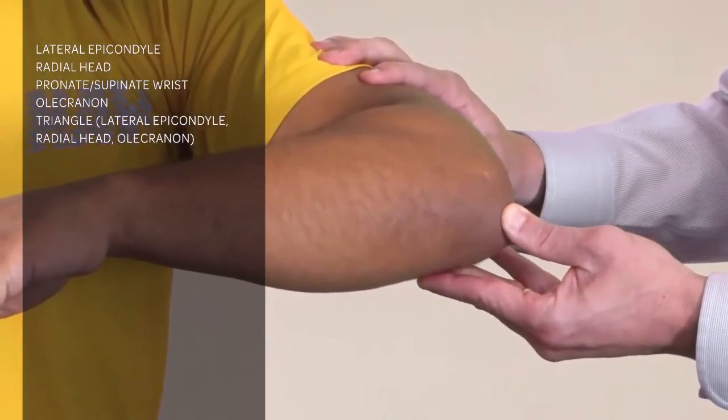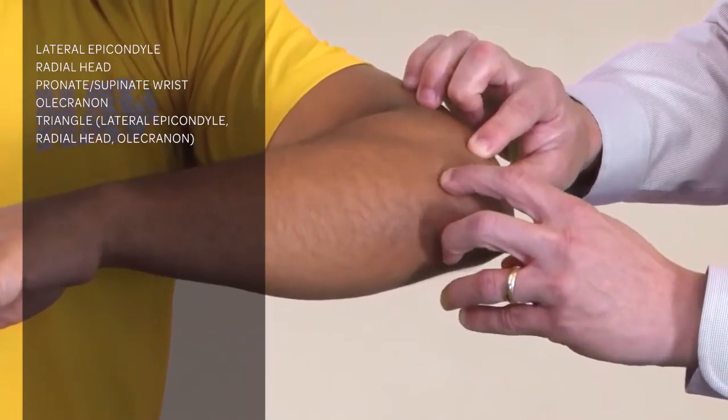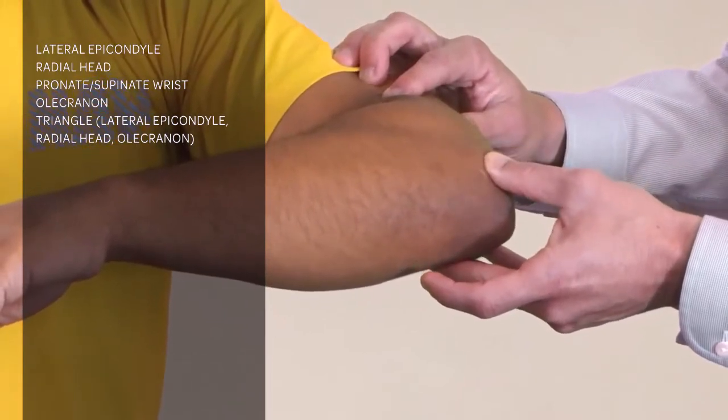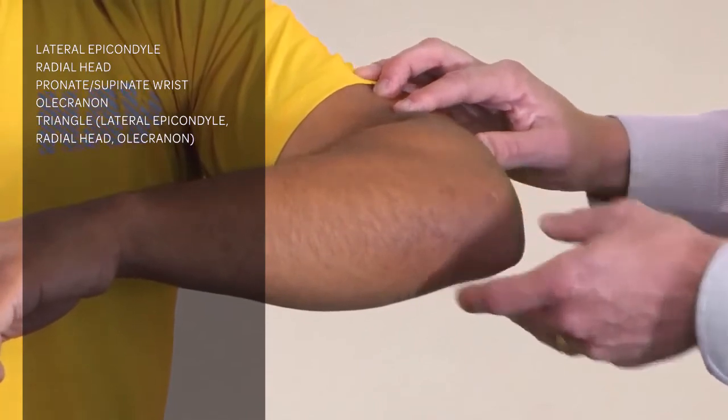Then you're feeling the olecranon, and there's a triangle made from the lateral epicondyle, the radial head, and the olecranon. That is the lateral aspect of the elbow joint, and you're feeling for any tenderness there. We've now completed inspection and palpation.